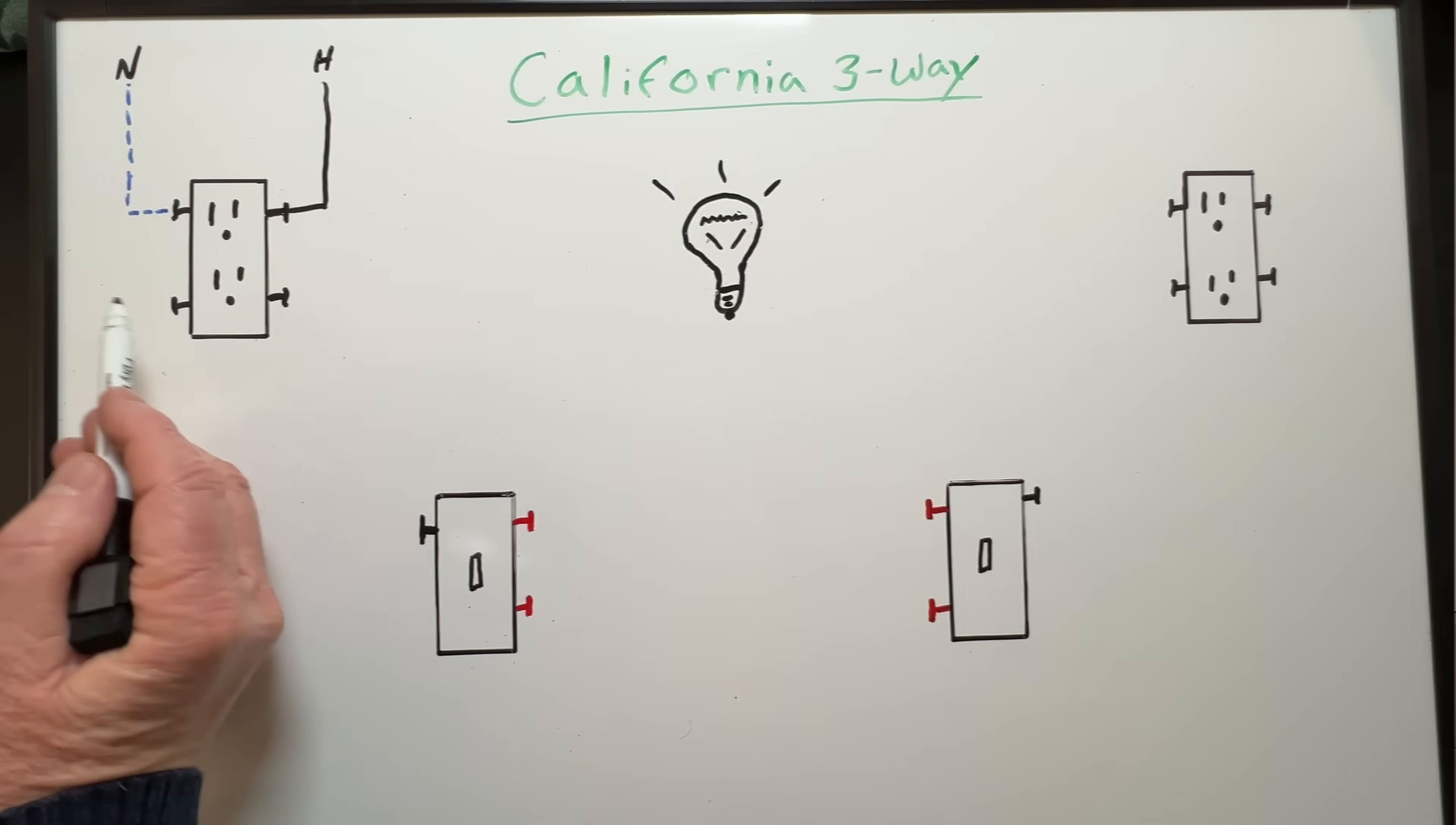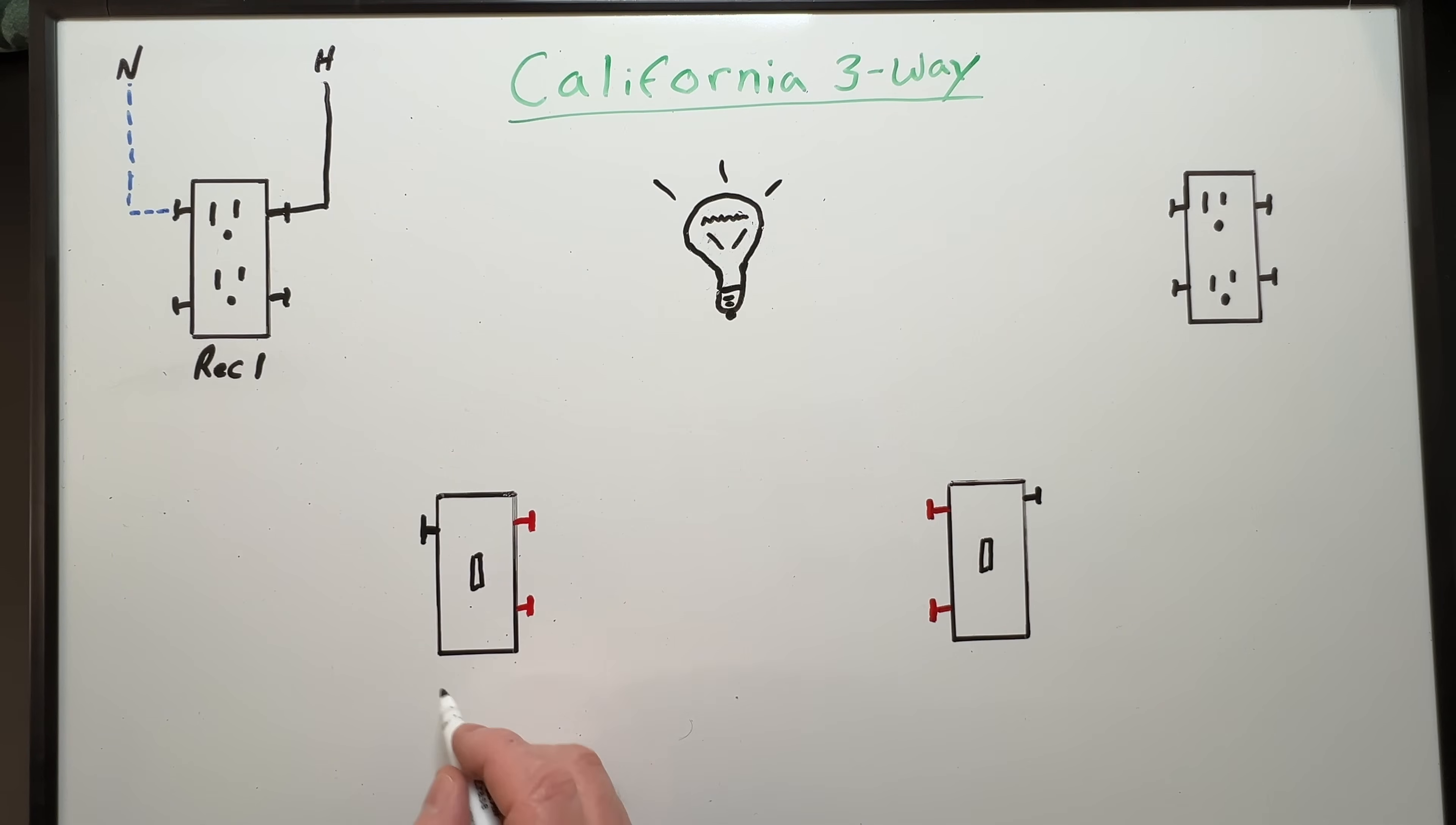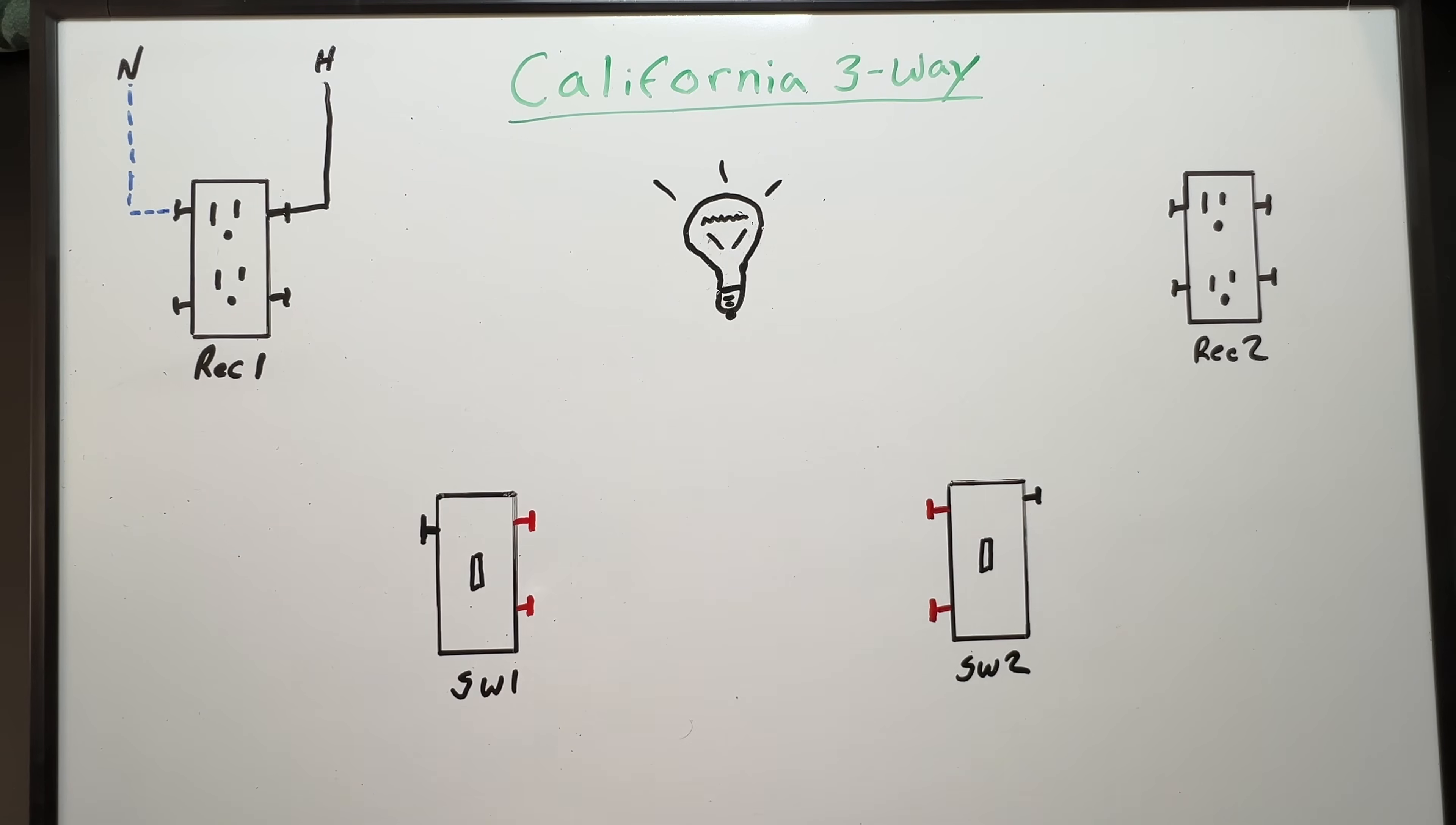Let's go to the whiteboard. Up here, we have our hot and our neutral coming into our first receptacle. We'll call this receptacle one. Then we have our first three-way switch, we'll call switch one. Our second three-way, switch two. And up here, another receptacle we'll call receptacle two. Then of course up here, we have our light.